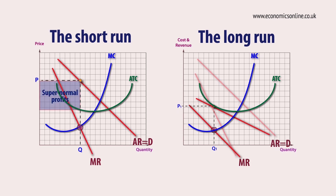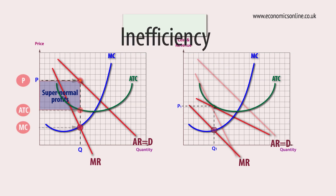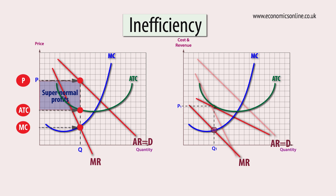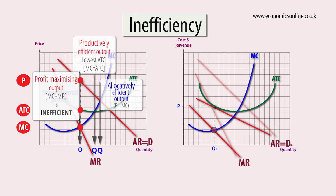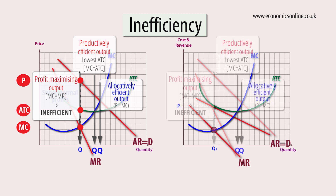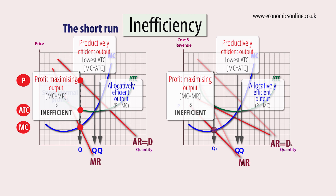Despite increased choice and innovation, firms operating under conditions of monopolistic competition experience allocative inefficiency, with price being greater than marginal cost, and productive inefficiency, with average cost being above its lowest possible point. This is true in both the short and long run.